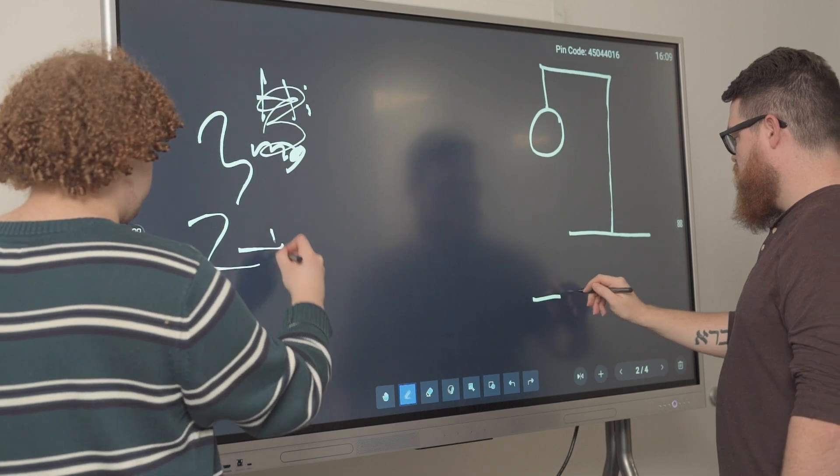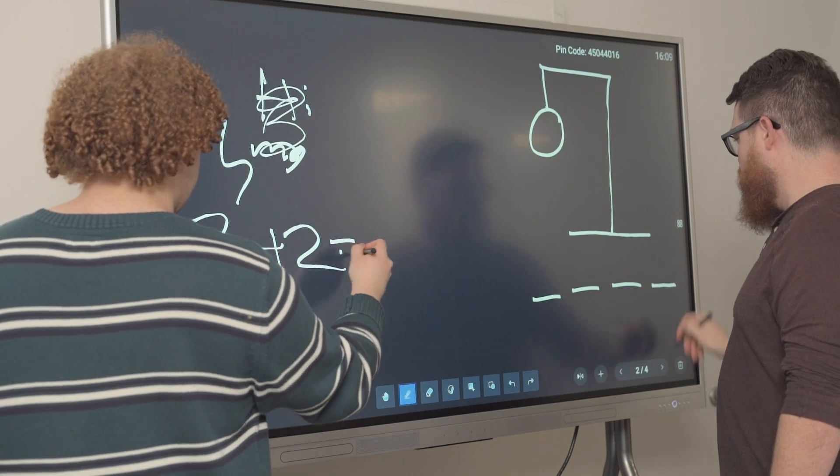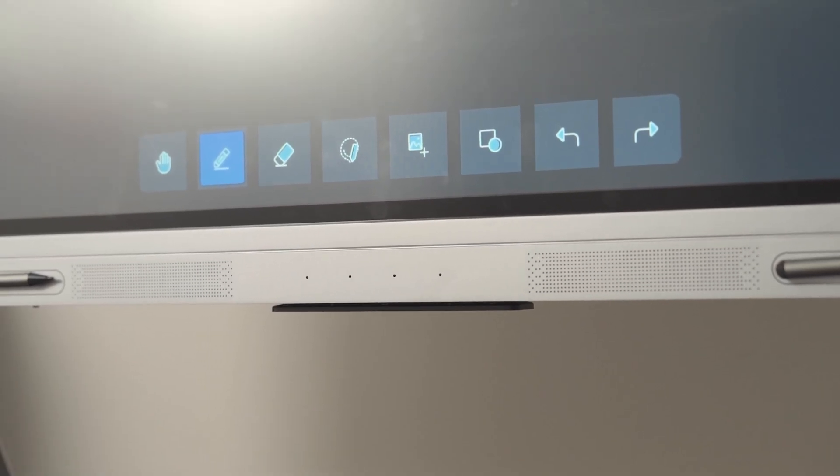The smart board comes with two smart pens that are magnetic and can stick to the designated magnets on the front of the displays. You can have multiple people marking on the board at once. The board has two speakers in the front.